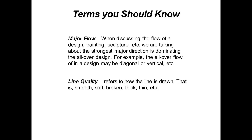So terms you should be aware of. One is flow or major flow. When discussing the flow of a design, painting, sculpture, etc., we're talking about the strongest major direction that is dominating the overall design. For example, the overall flow of a design may be diagonal, vertical, spiral, or even the infinity sign — you can see that in some classic Renaissance paintings. When we talk about flow, we're not concentrating on where the eye goes first, second, or third in a piece; we're just saying what is the strongest all-over direction that the piece has taken on.